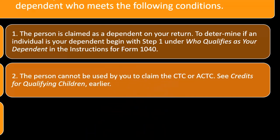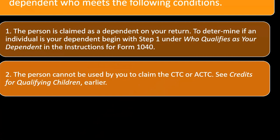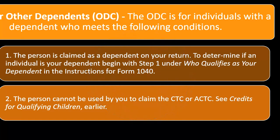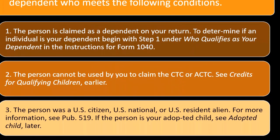Condition two: the person cannot be used to claim the CTC child tax credit or ACTC additional child tax credit — because if you could claim those, you would, since they provide more benefit. That's why, when you can't claim CTC or ACTC, you fall back to the ODC other dependent credit. Condition three: the person was a U.S. citizen, U.S. national, or U.S. resident alien. For more information, see Publication 519. If the person is your adopted child, see the adopted child section.